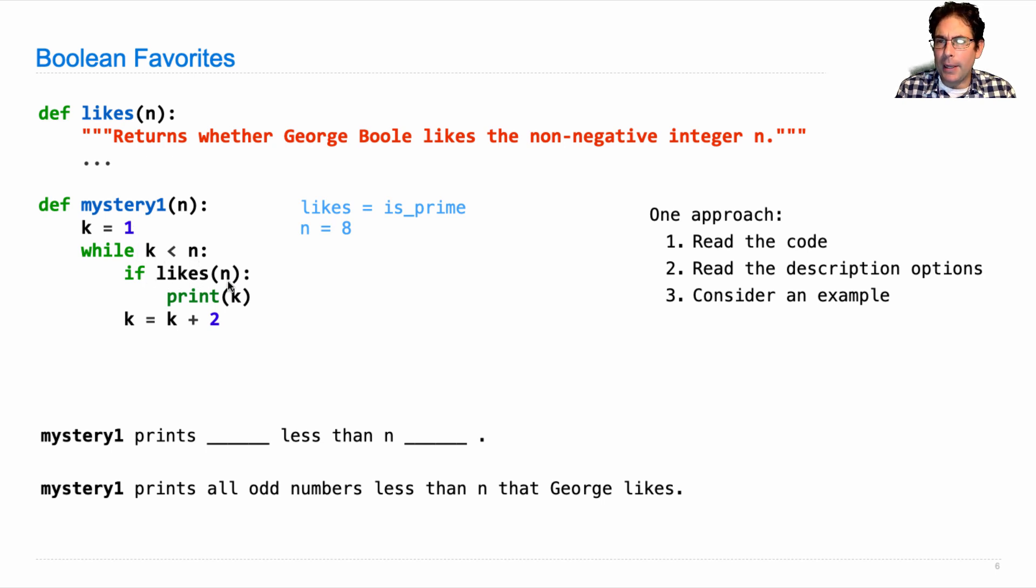If likes n is actually if likes eight, and if likes is prime, well it turns out George doesn't like eight and so we will not print. But since this is not indented as part of the if statement, this will get executed anyway. So we'll go to k equals three and go through again.